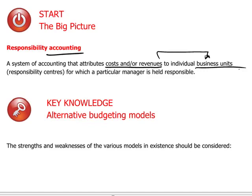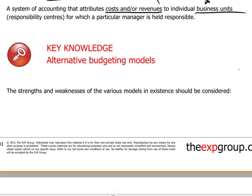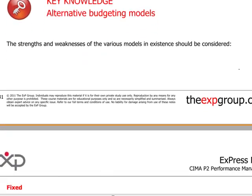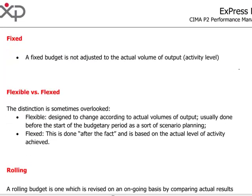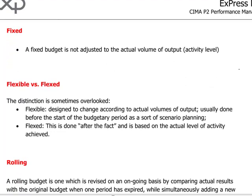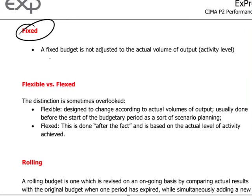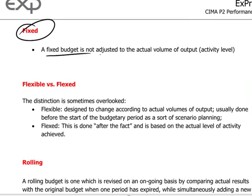Moving on to alternative budgeting models, candidates should be familiar with the following categories. The fixed budget is your standard traditional budget, set at the beginning of the period and remaining unchanged throughout.